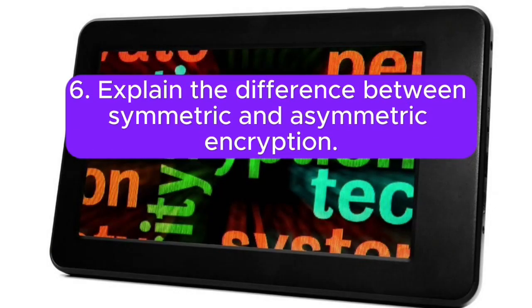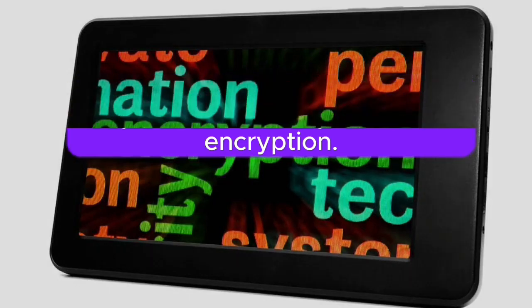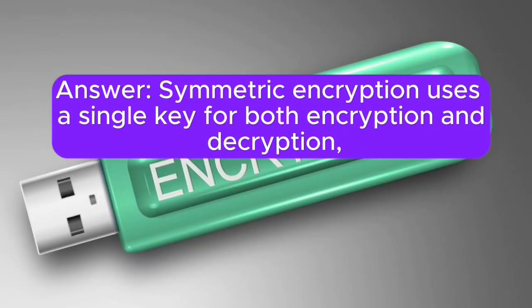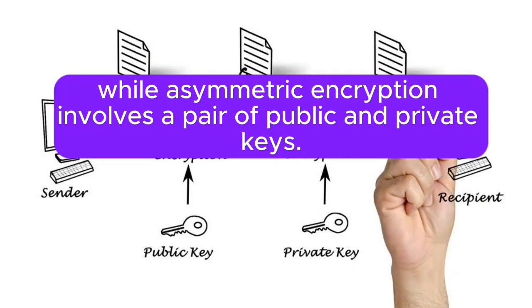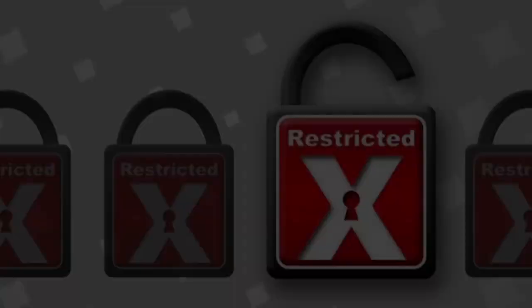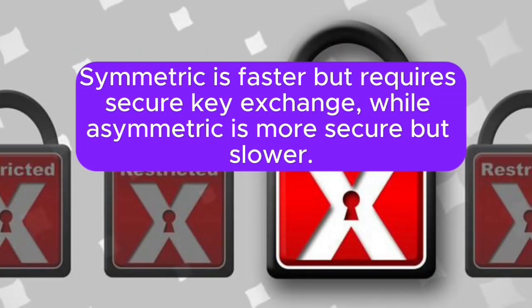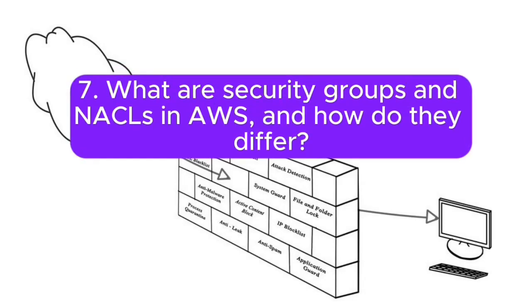6. Explain the difference between symmetric and asymmetric encryption. Symmetric encryption uses a single key for both encryption and decryption, while asymmetric encryption involves a pair of public and private keys. Symmetric is faster but requires secure key exchange, while asymmetric is more secure but slower.